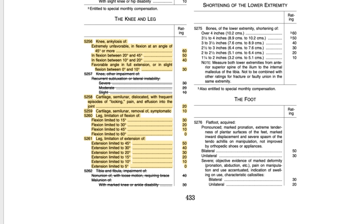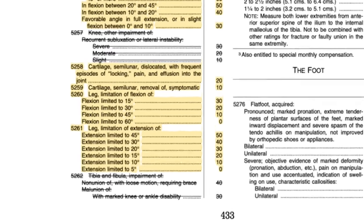The stuff that didn't change in February would be the ratings for cartilage — diagnostic code 5258. You can get a 20% for that, or if your cartilage is removed you can get a 10% rating.